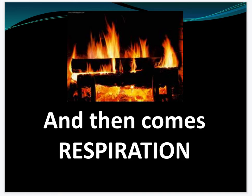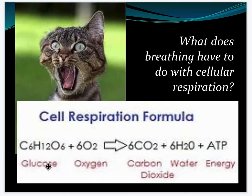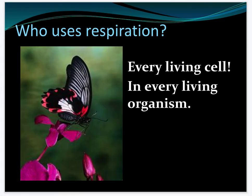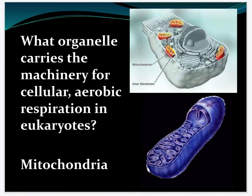That was all photosynthesis — now we're moving on to respiration. Every living cell on the planet uses cell respiration, and the organelle that does this is the mitochondria. The difference between plants and animals is that the mitochondria transfers chemical energy from glucose — taking sugar and turning it into energy — while chloroplasts turn light energy into chemical energy to make ATP. One uses sugar, and one uses light energy.